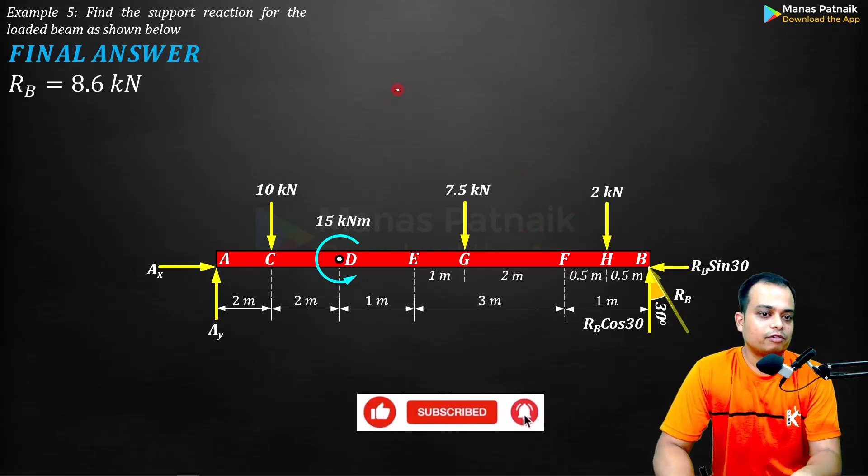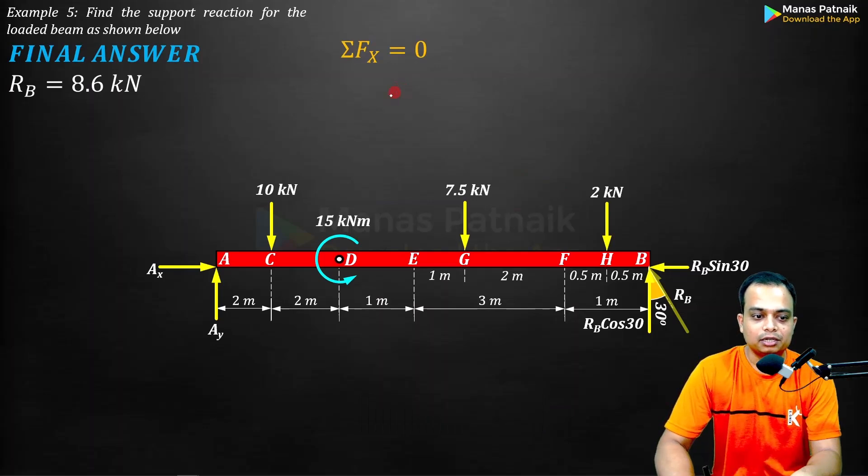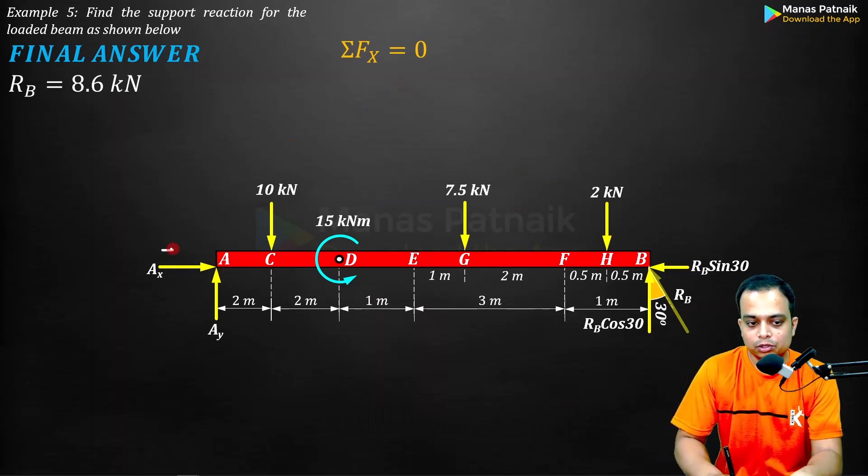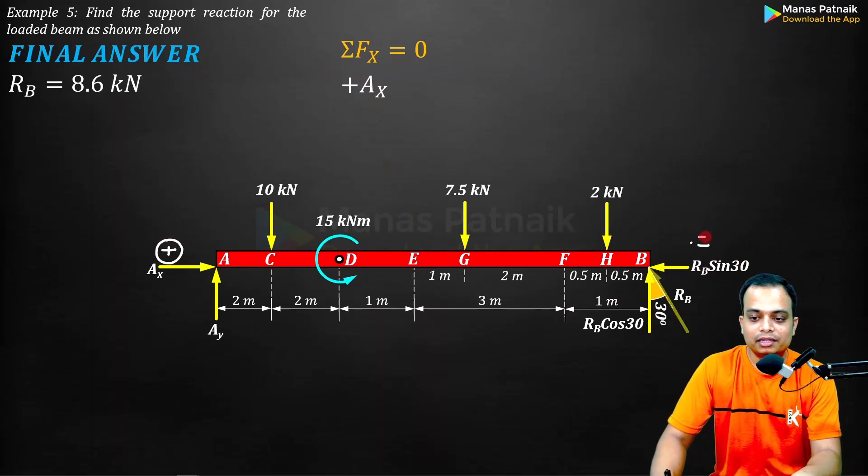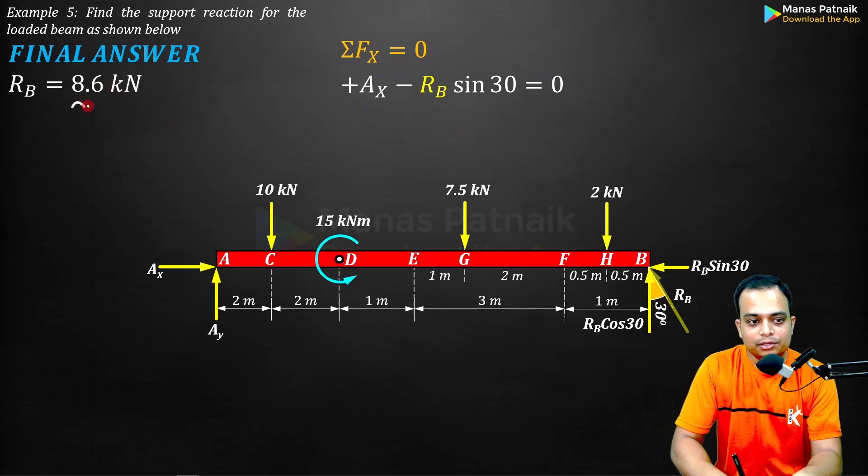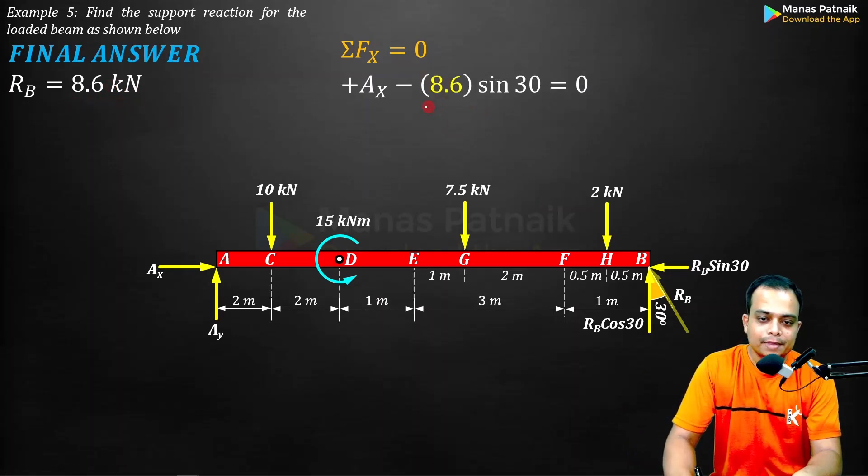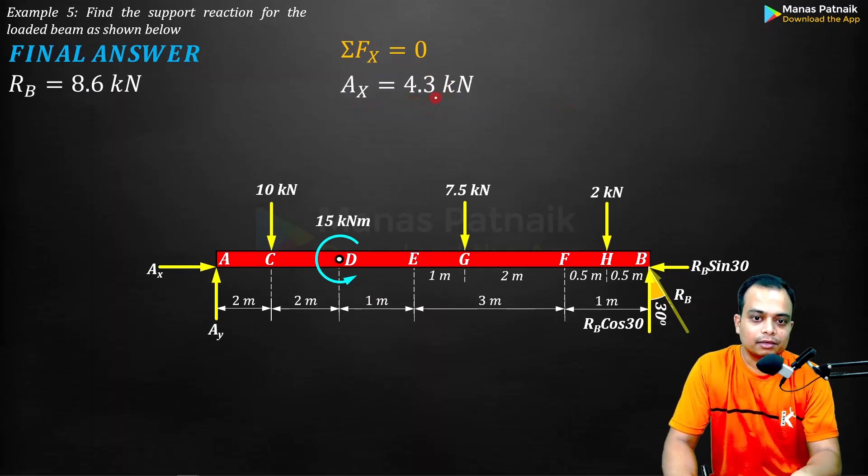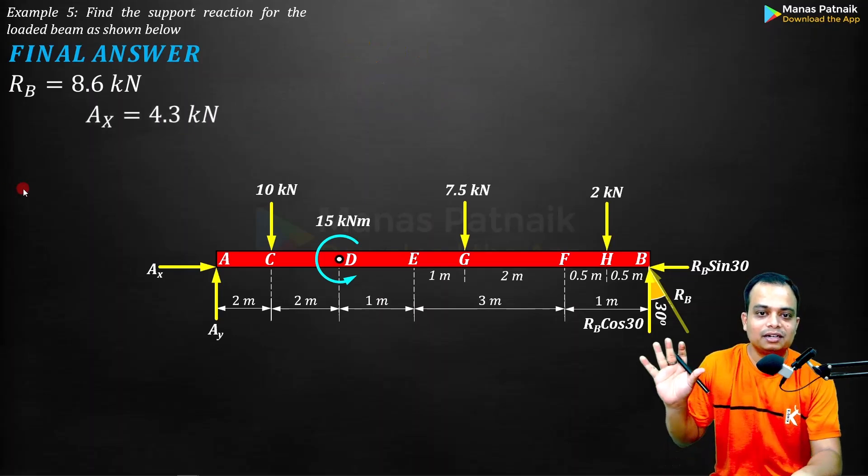Secondly, I'm going to go for summation of all the forces along X direction equals zero. Ax is to the right, therefore positive. RB sin theta is to the left, that is negative. RB's value is 8.6, so let me plug in the value as 8.6 over here, and on solving this equation I'll get Ax. One more answer done.